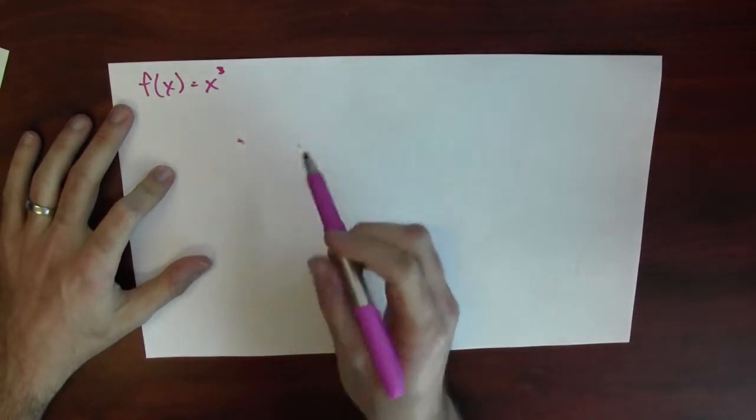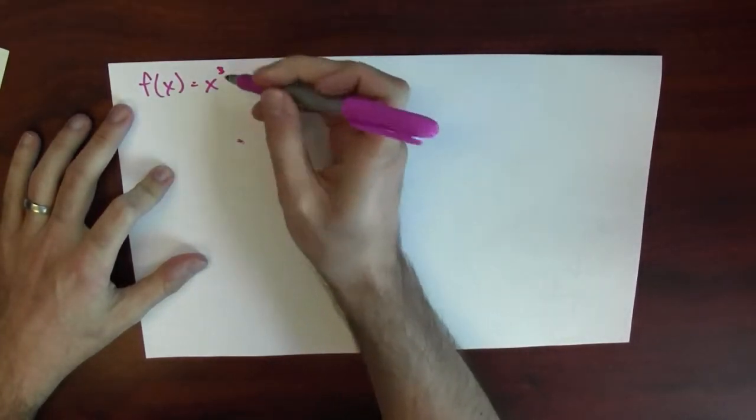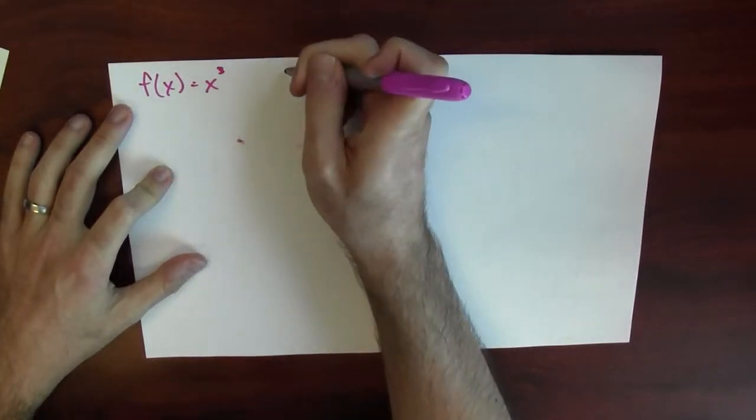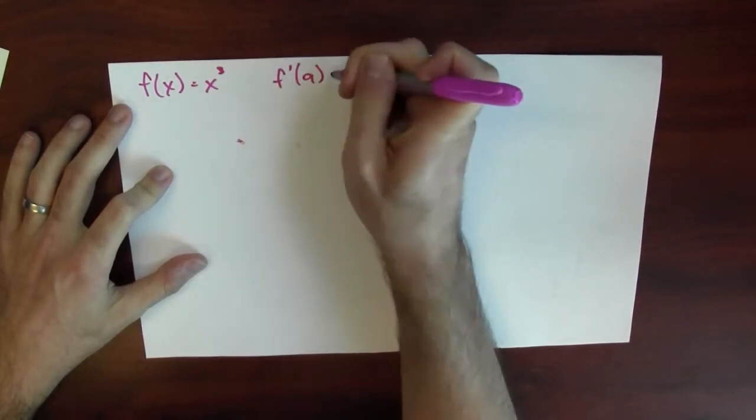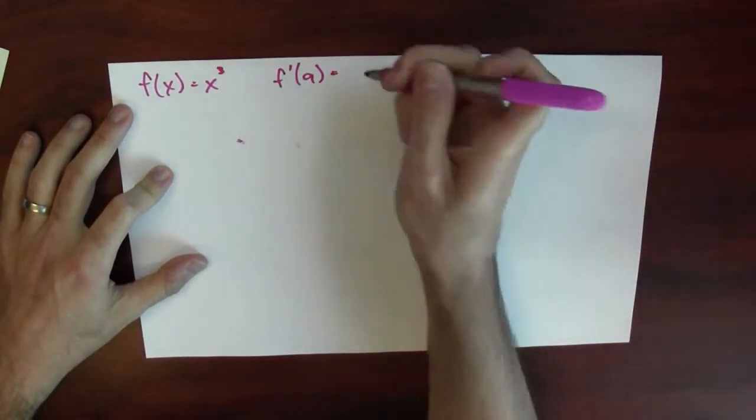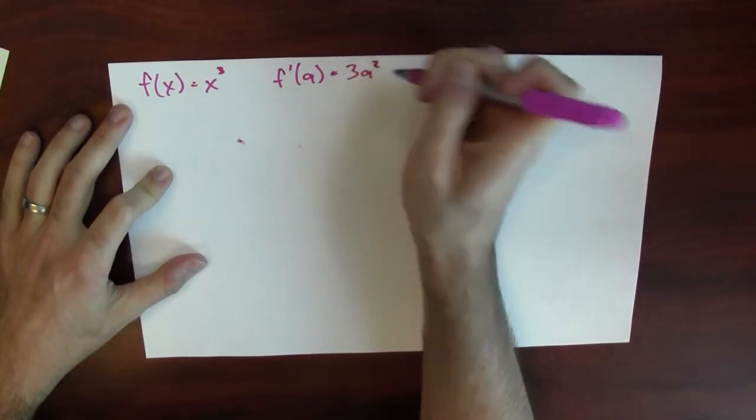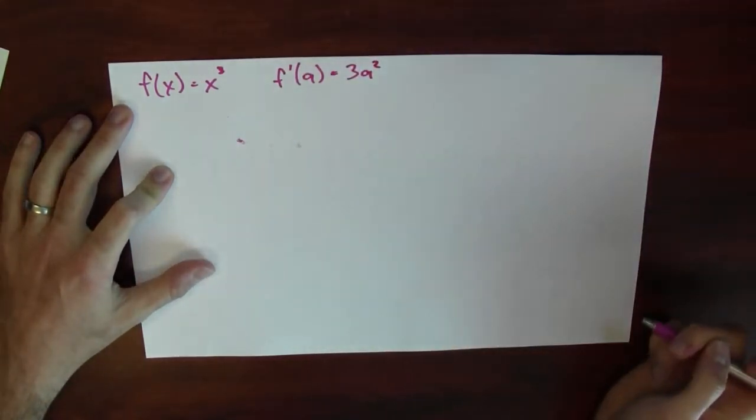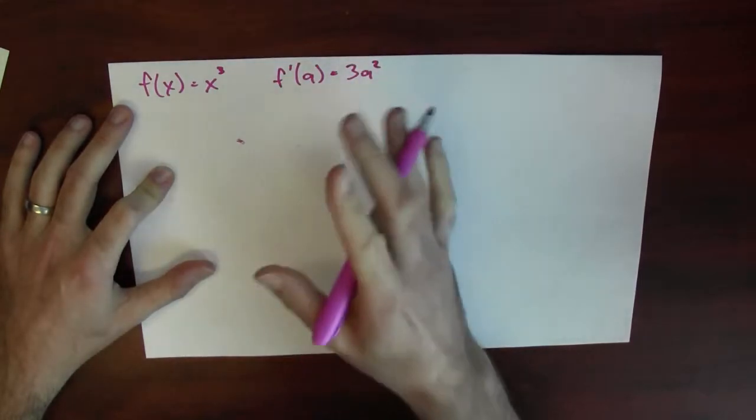Pull down the 3 and subtract 1, so the derivative of this is 3x squared, and if I evaluate that derivative at a, the derivative is 3a squared. So that's just from remembering what the product rule tells you to do.